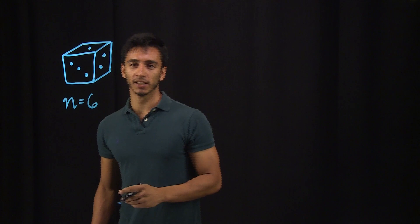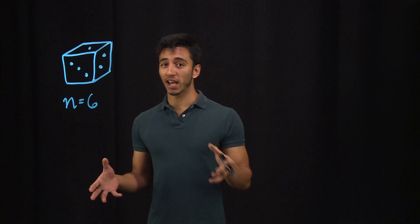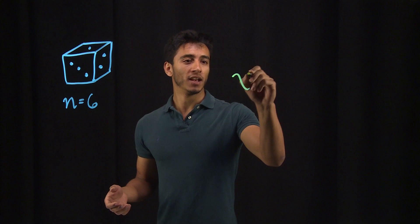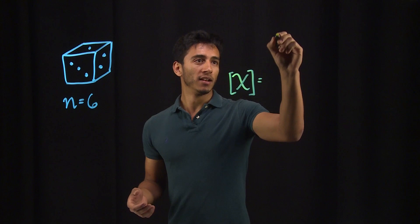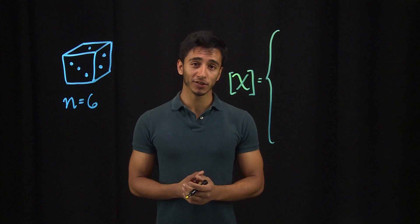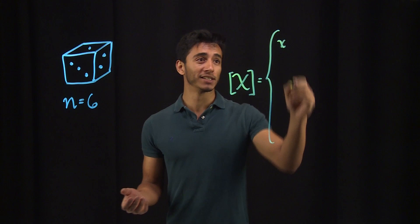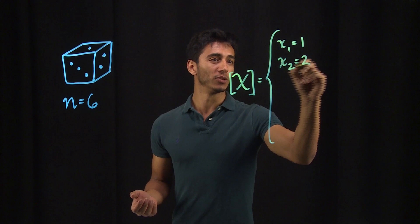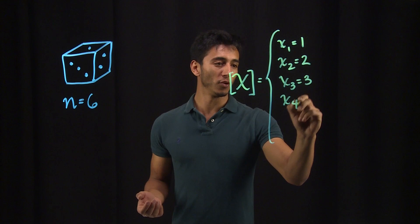Now let's represent this die in the form of a random variable. So we have our X in brackets. Our sample space, or the possible values that we might get when we toss the die, are one through six. So X1 is 1, X2 is 2, X3 is 3, X4 is 4, X5 is 5, and X6 is 6.